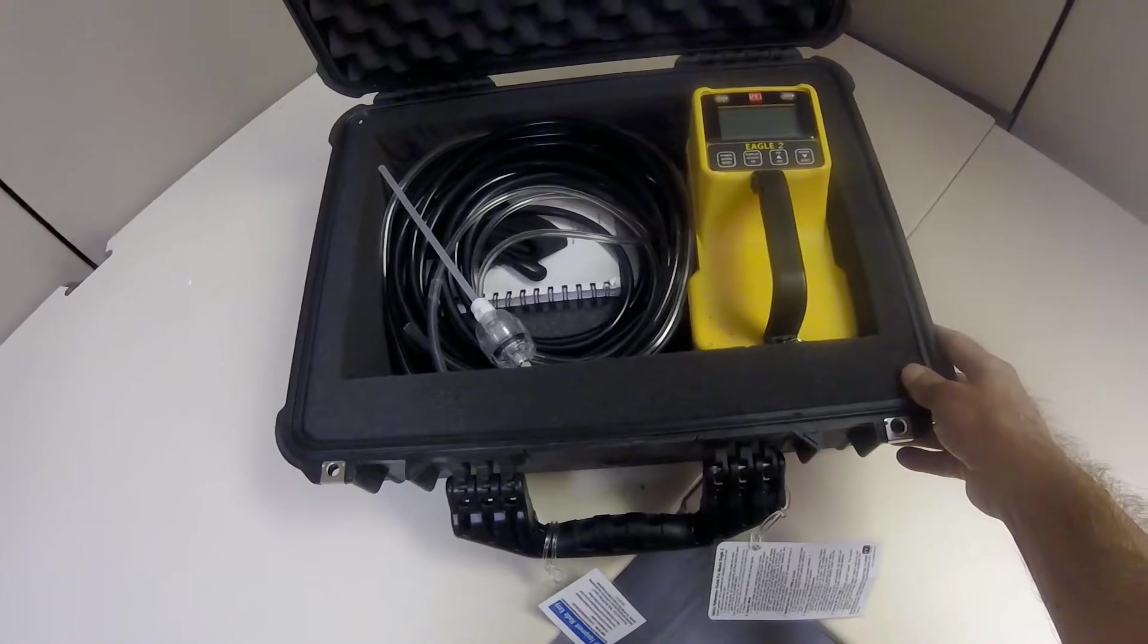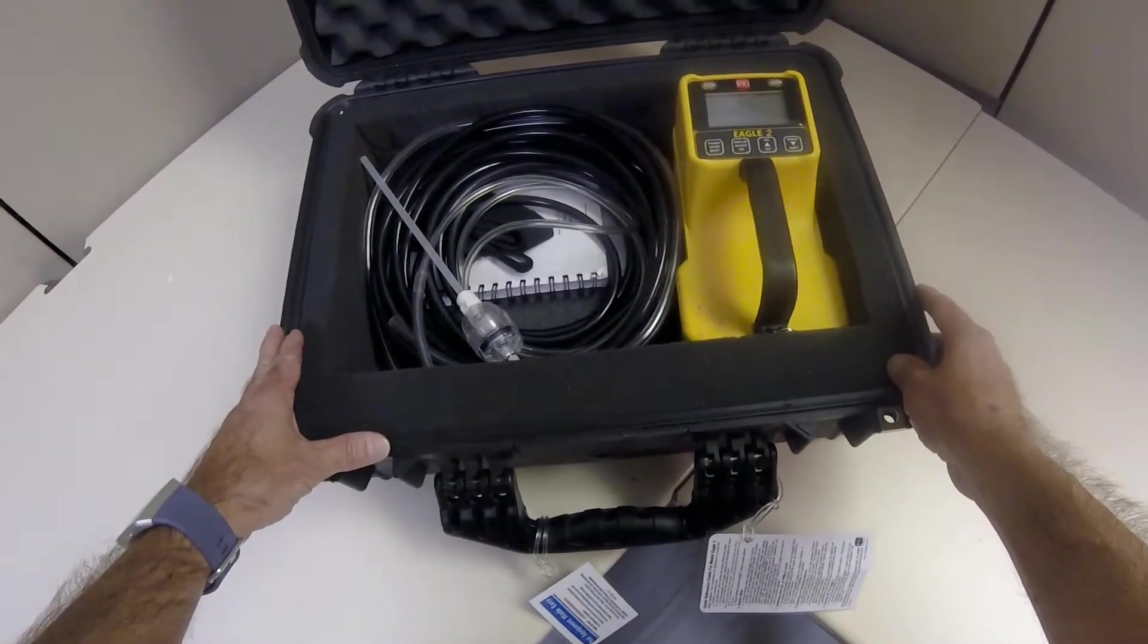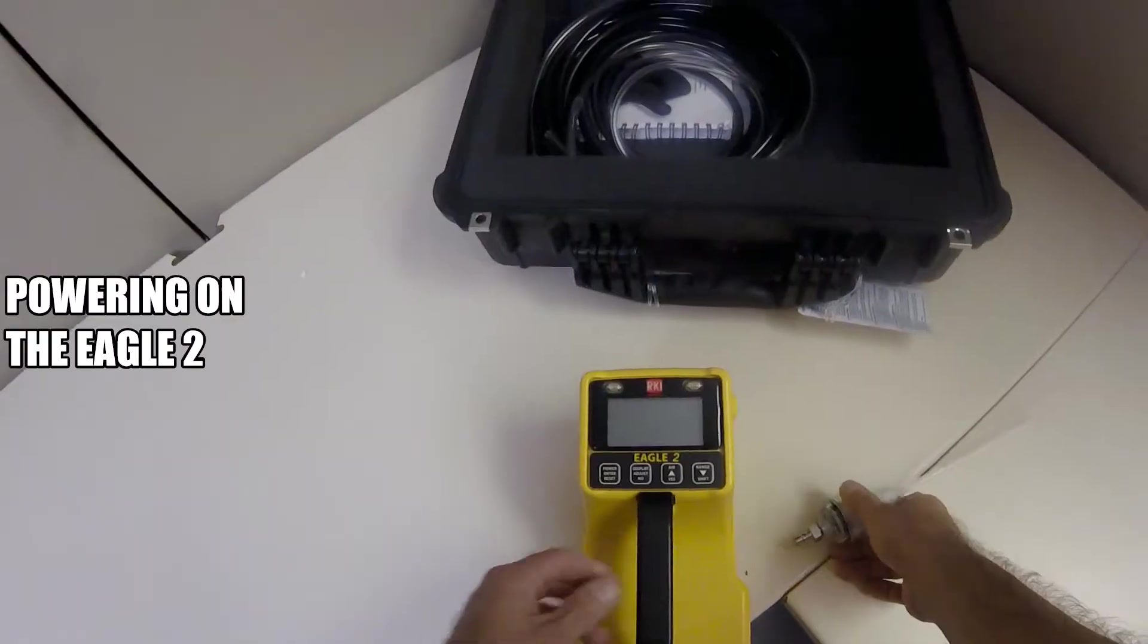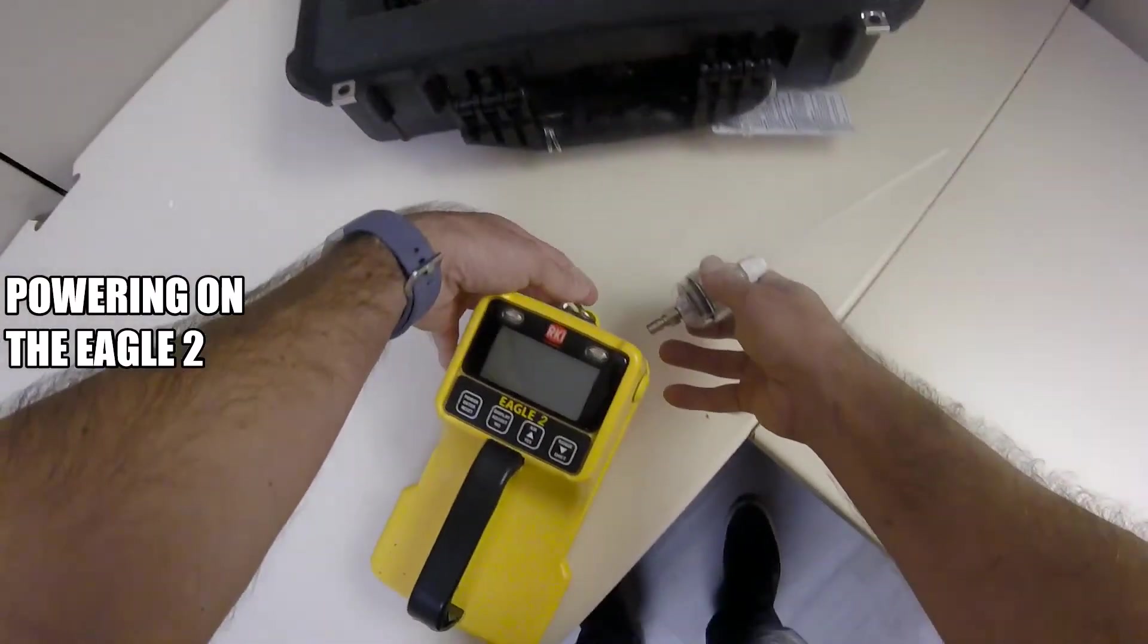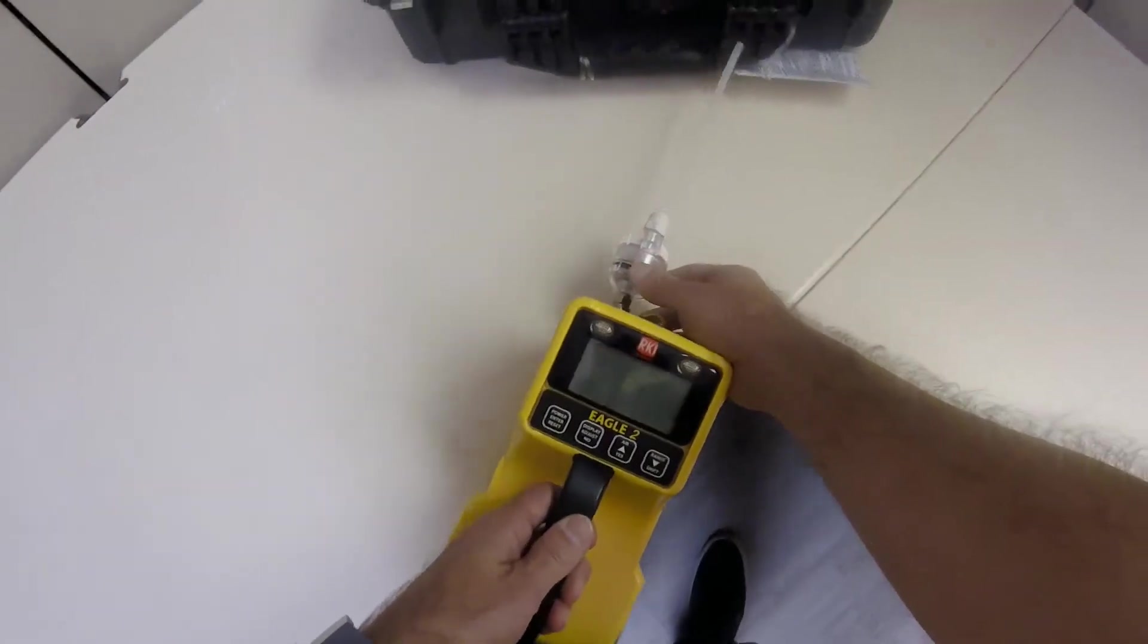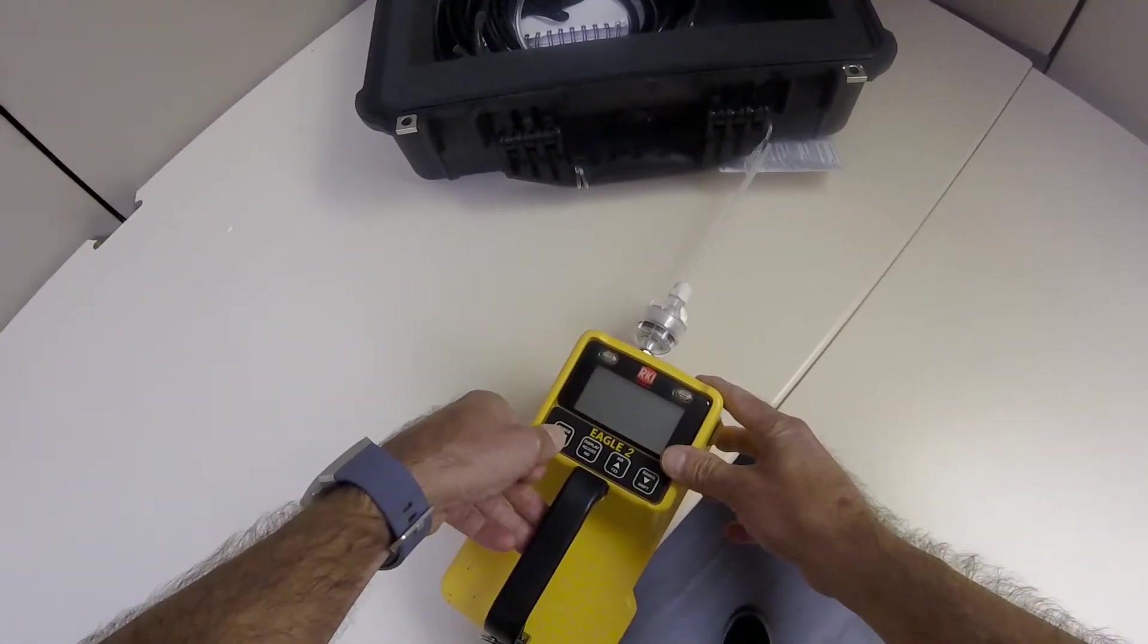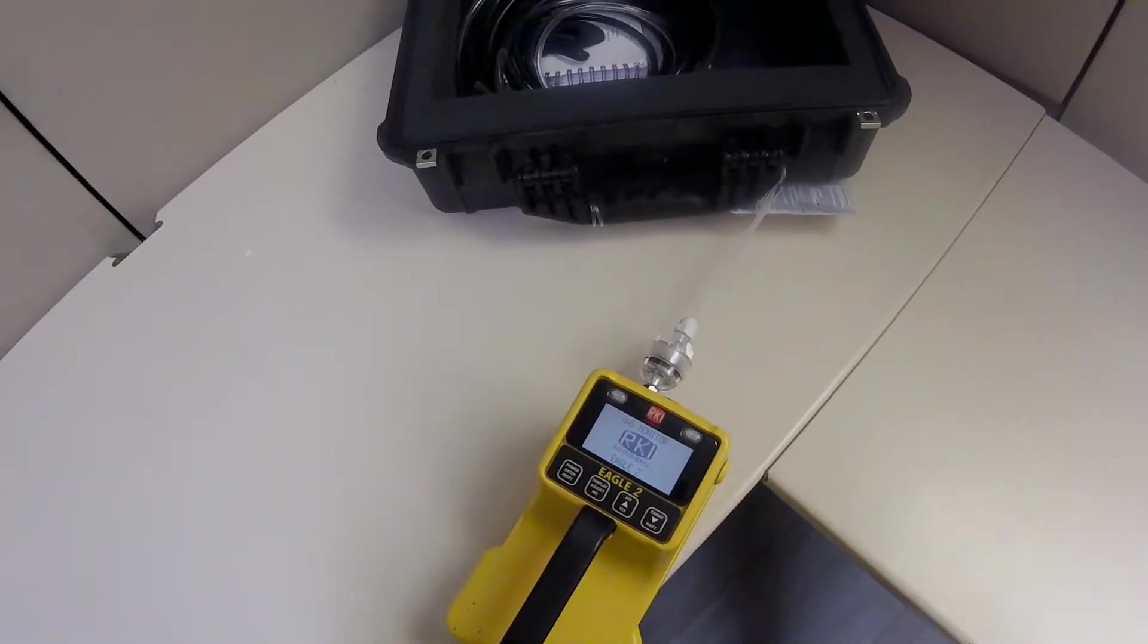First we will review how to simply turn the monitor on. Please remember when you turn the Eagle II on, it needs to be in a known fresh air environment. Powering on your unit: Connect the sample hose and probe to the Eagle II's quick connect inlet fitting. Press and briefly hold the power enter reset button. Release the button once the monitor makes a beeping noise.